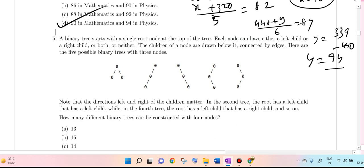Next, a binary tree starts with a single root node at the top of the tree. Each node can have either a left child or a right child or neither or both. Nodes are drawn below and connected by edges.